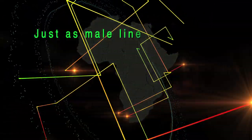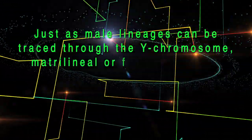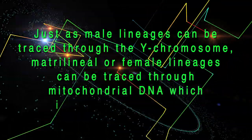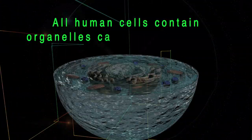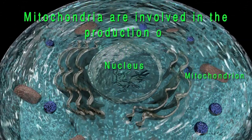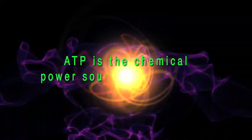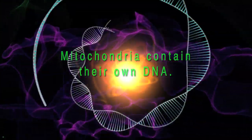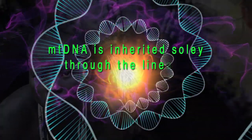Just as male lineages can be traced through the Y chromosome, matrilineal or female lineages can be traced through mitochondrial DNA, abbreviated MT-DNA. All human cells contain organelles called mitochondria, which are involved in the production of adenosine triphosphate or ATP — a chemical power source for our cells. Mitochondria contain their own DNA, which is inherited solely through the lineage of the mother.